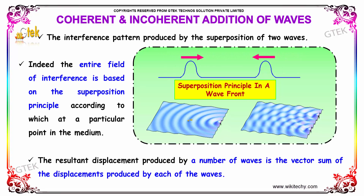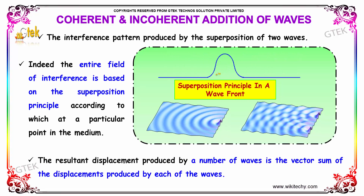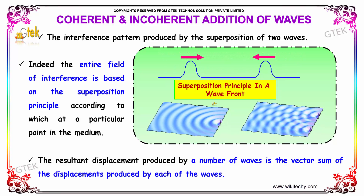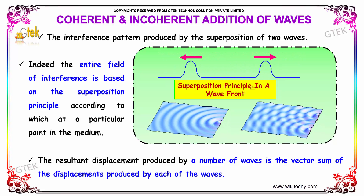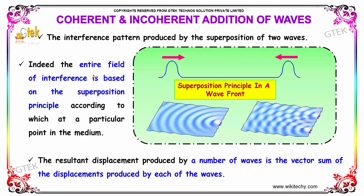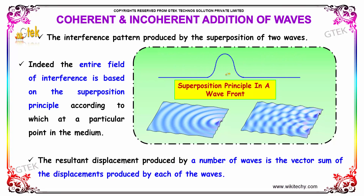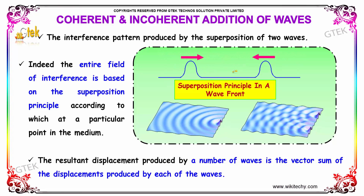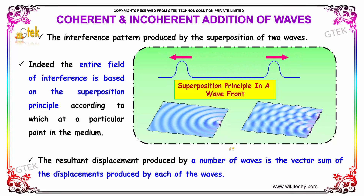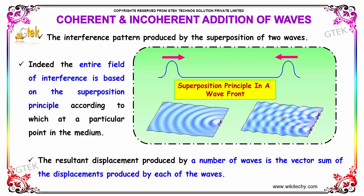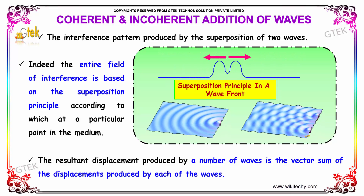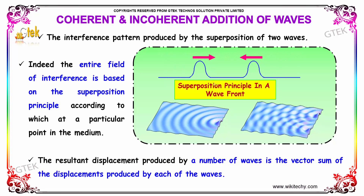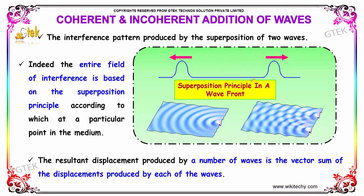The interference pattern produced by the superposition of two waves is shown here. This is the superposition principle. The entire field of interference is based on the superposition principle, according to which at a particular point in the medium, the resultant displacement produced by a number of waves is the vector sum of the displacement produced by each of the waves. That's referred to as the superposition principle.